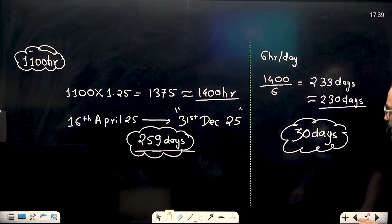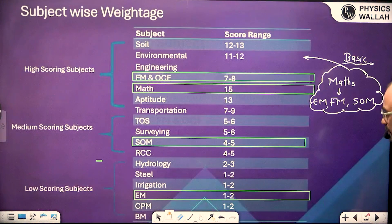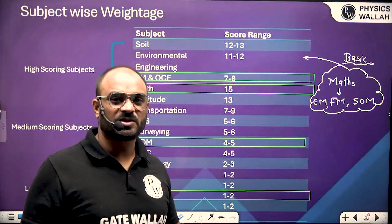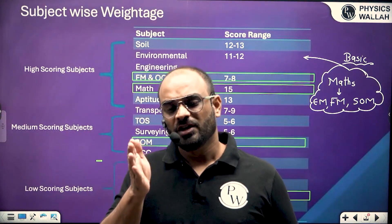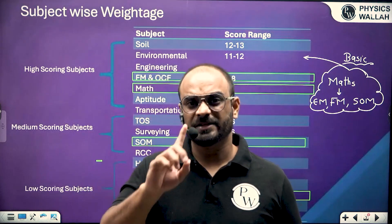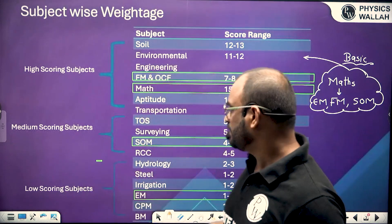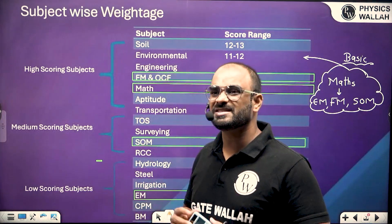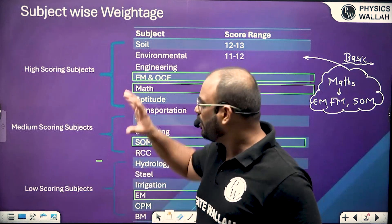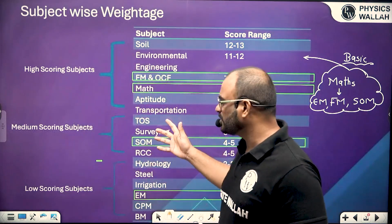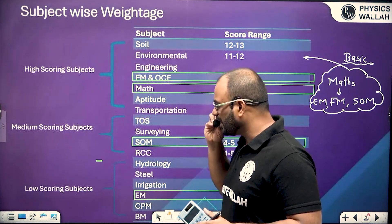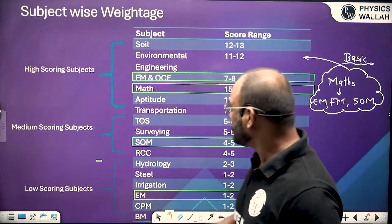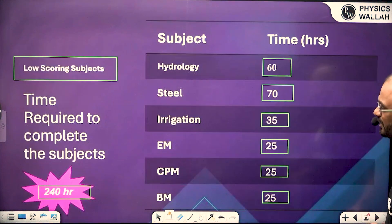One more point: most students doubt whether they need to use standard books or not. Each faculty will suggest for their subject whether to refer the textbook or not. In general, if you want to practice more questions and understand more concepts, try to refer the textbooks for high scoring and medium scoring subjects only — and even in medium scoring, only for a few subjects. Try to ignore standard textbooks for low scoring subjects in the GATE examination.